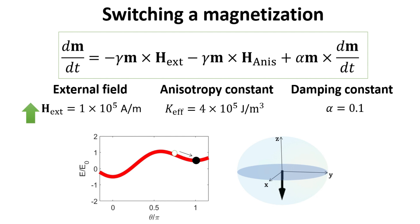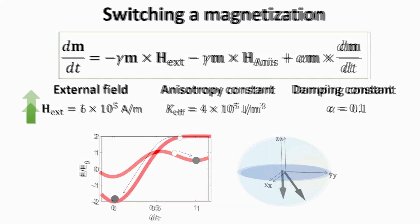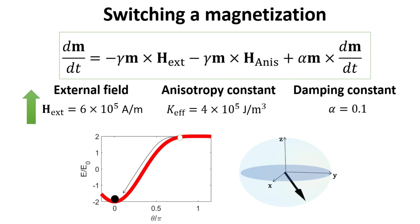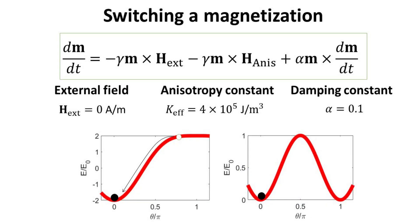By increasing the magnitude of the external field above a critical value, the energy landscape displays a single minimum. In this case, the magnetization relaxes towards it and switches to the positive Z direction, as shown in the simulation. Hence, the external field destabilizes the metastable magnetization state and forces the magnetization towards the direction of the external field. Now, if the external field is turned off, the energy landscape due to the anisotropy field only is restored, and the magnetization is trapped at the plus Z direction since it is one of the anisotropy energy minima. Thus, switching from the minus Z direction to the plus Z direction has taken place.